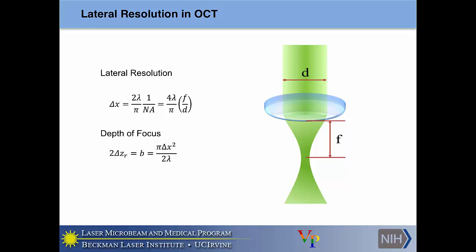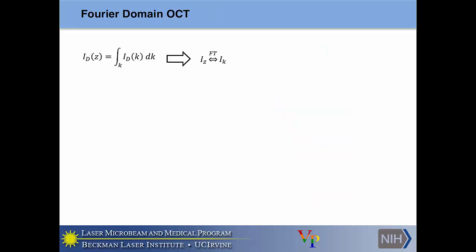Axial resolution is completely source dependent. Lateral resolution, on the other hand, is — as with most other optical techniques — completely optics dependent. The optical resolution, using a Gaussian lens estimation, is dependent on the wavelength, the focal length of the lens, and the diameter of the illuminating beam, or expressed in terms of the numerical aperture. The depth of focus is dependent on the lateral resolution and the wavelength being used. Everything explained before — scanning the reference arm in space — is what we call time domain OCT, so named because we're scanning different depths as a function of time.